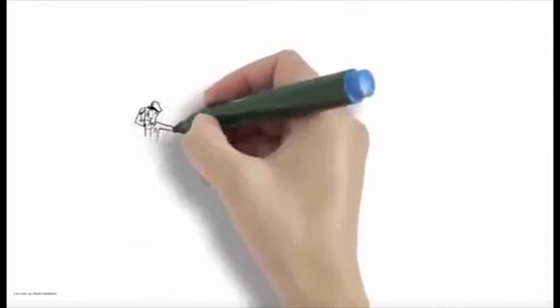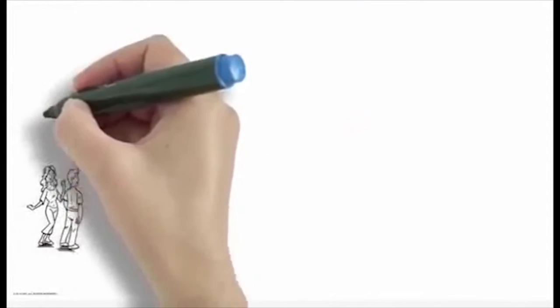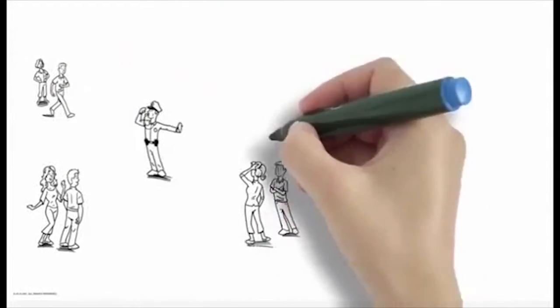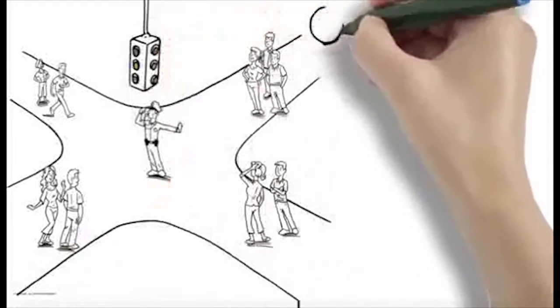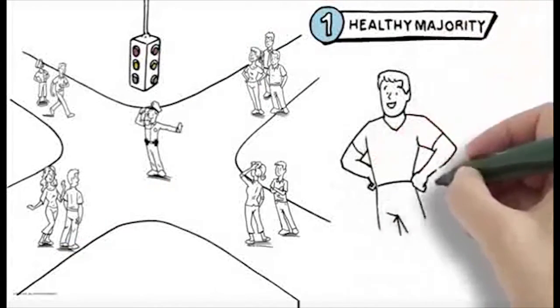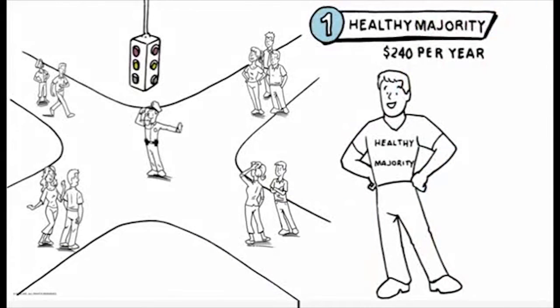Now any large population can be divided into four biological cohorts, each demanding distinctly different management approaches and none of which were part of old-school managed care theory. The first population cohort, and by far the largest, is the healthy majority. In any year, half of all Americans average only $240 in healthcare spending.